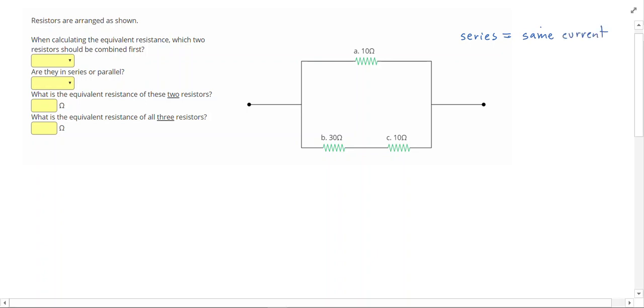I can tell if two are in series because there's no intersection between them. If current flows through one, it has to flow through the other.